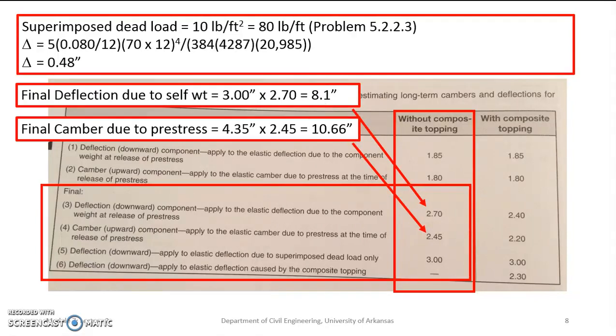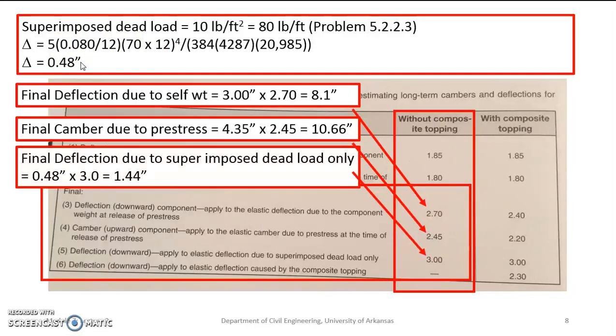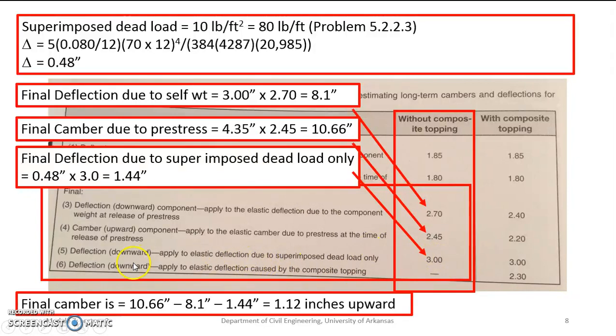We also have from problem 5.2.2.3 a superimposed dead load, which is 10 pounds per square foot. The double T is 8 feet wide, so that's 80 pounds per foot. So we're going to take our deflection, which is 5 WL to the 4th over 384 EI. E is now 33 times Wc to the 1.5 times the square root of 5,000 because we're at final deflection. So we have our 80 pounds per linear foot. We end up with a downward deflection of 0.48. Then I'm going to take this deflection downward, which applies to elastic deflection due to superimposed dead load only. We're going to multiply it by 3. So my final camber then is 10.66, which is up, minus 8.1, minus 1.44. So without any live load on it, that double T is deflecting 1.1 inches upward.